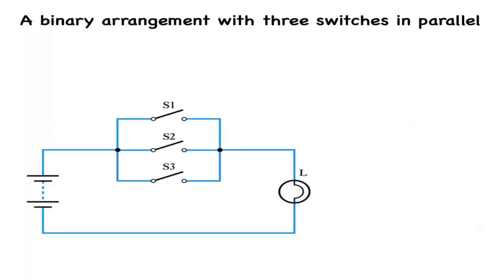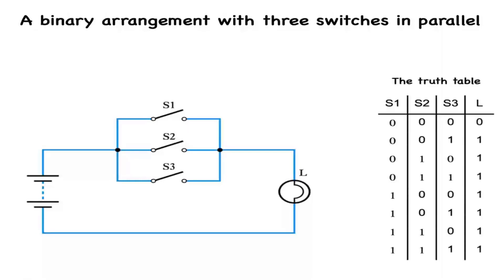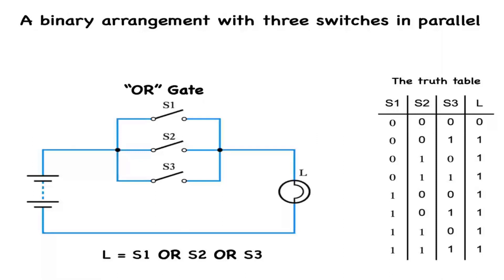Here is another binary arrangement with three switches, this time in parallel, which generates the truth table. The three switches form what is known in logic gate terms as an OR gate. We state its logic in the equation: L equals S1 OR S2 OR S3.